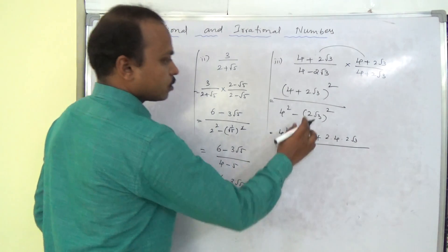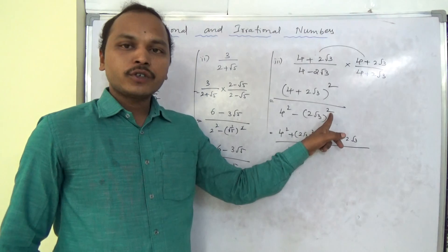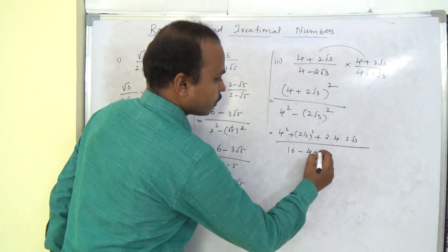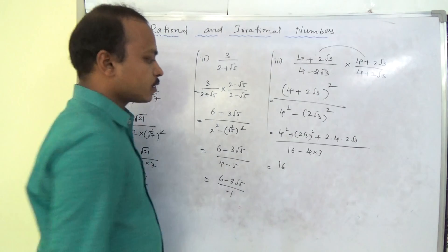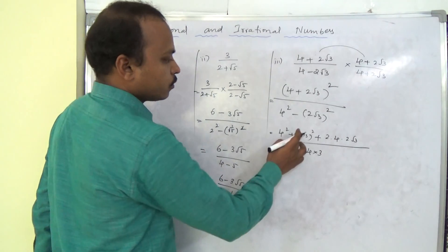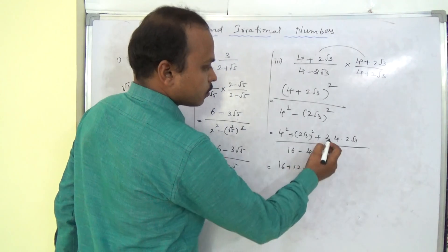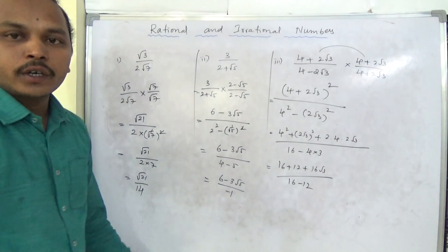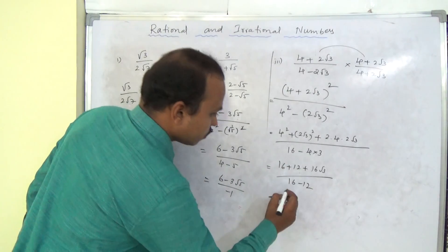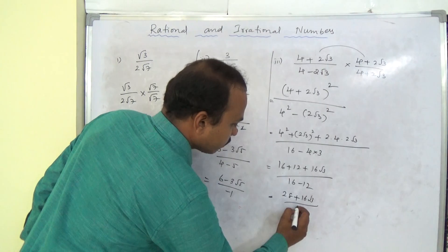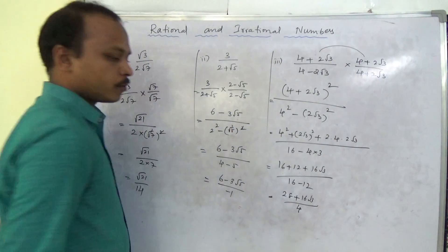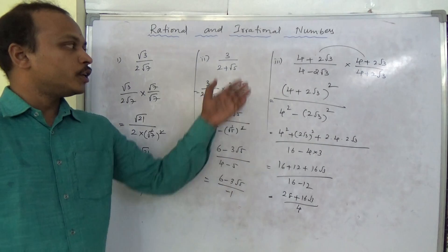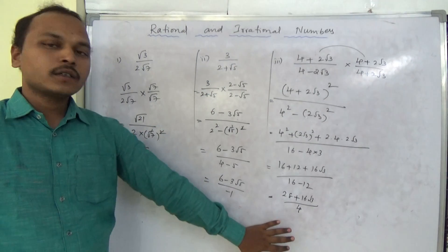The denominator is 16 minus (2√3)² — applying the square to both 2 and √3: 2² = 4 and (√3)² = 3, so 4 × 3 = 12, giving 16 − 12 = 4. The numerator is 16 + 12 + 16√3 = 28 + 16√3. So the final answer is 28 + 16√3 by 4. The denominator is rationalized. For any such question, multiply and divide with the rationalizing factor to rationalize the denominator.